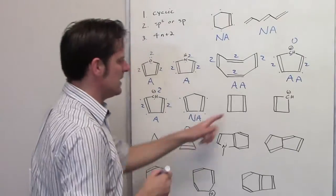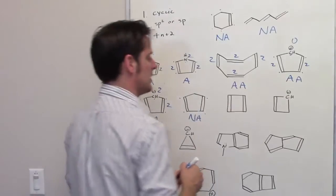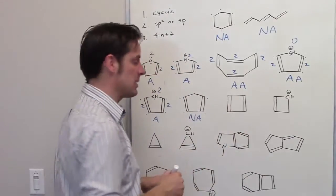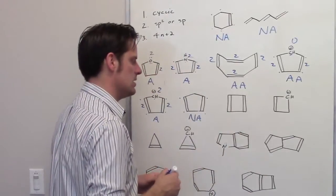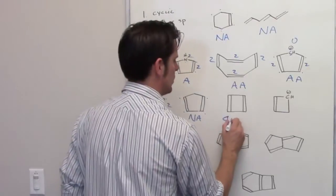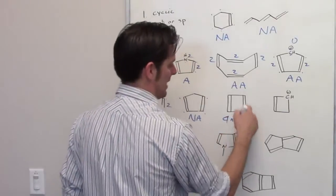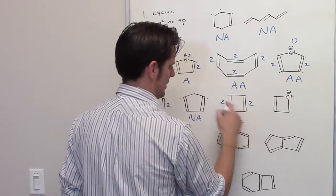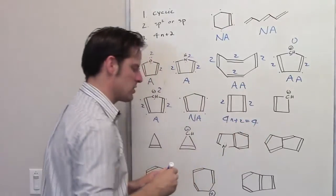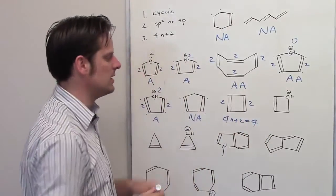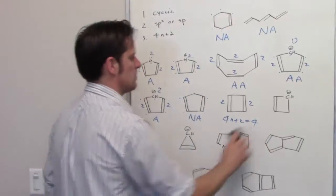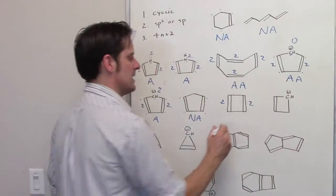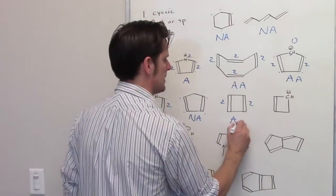Hopefully you're getting the hang of this. Is this molecule cyclic? Yes. Are all of the atoms in the ring sp2 or sp hybridized? Yes, they are. Does it meet the 4n + 2 rule? I've got a double bond here (2) and a double bond there (2) — total 4. Can I solve 4n + 2 = 4 for an integer n? No. So this molecule meets criteria 1 and 2, but not 3 — it is anti-aromatic.